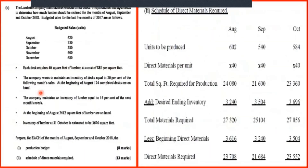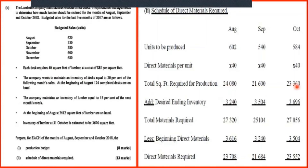The next part requires a schedule of direct materials required. Notice it does not ask for the payment, meaning the $85 per square foot figure would not be used. For the materials budget, we put in the production amounts required and multiply by the materials required per unit, which is 40 square feet of lumber. We get the total square feet required for production: 24,080; 21,600; 23,363. We then apply the same formula, adding the desired ending inventory.